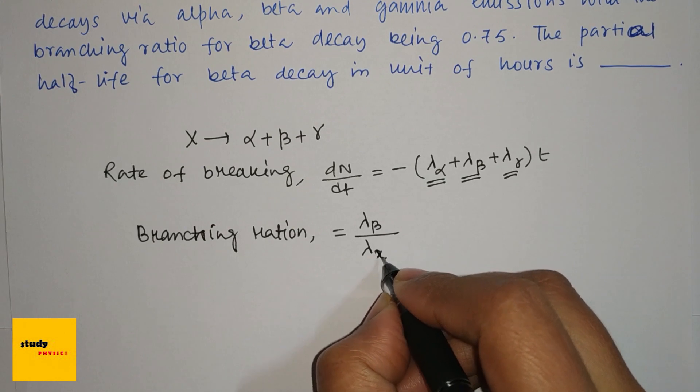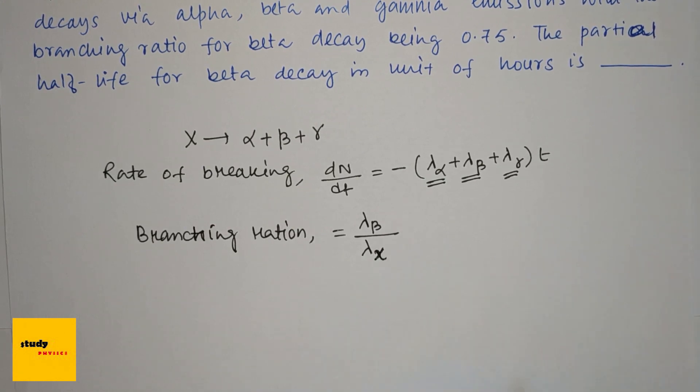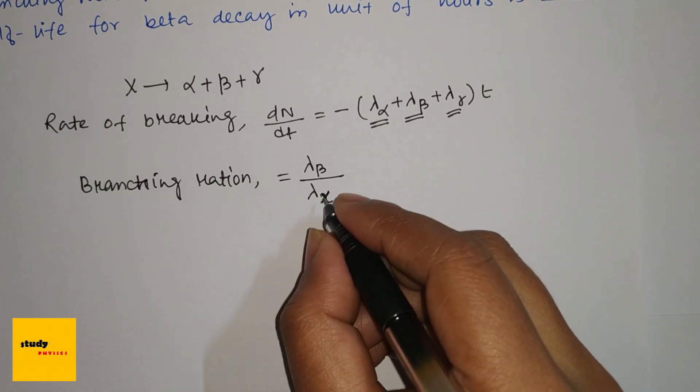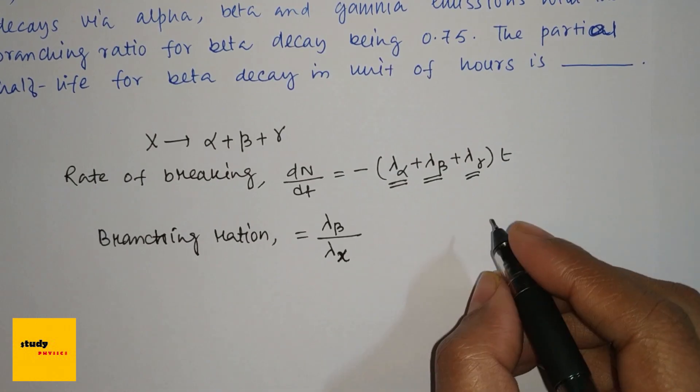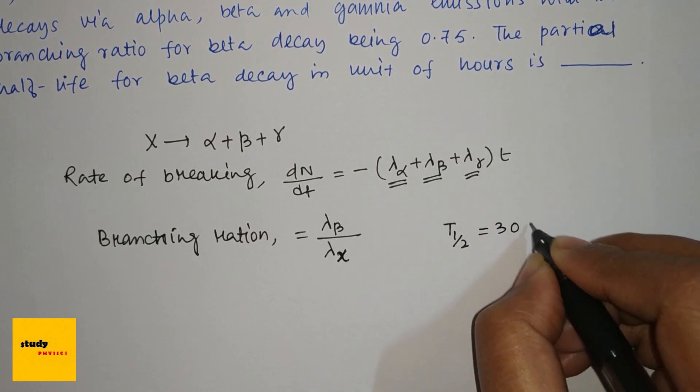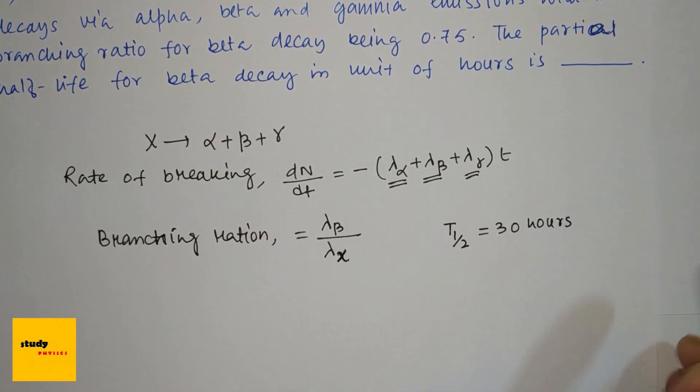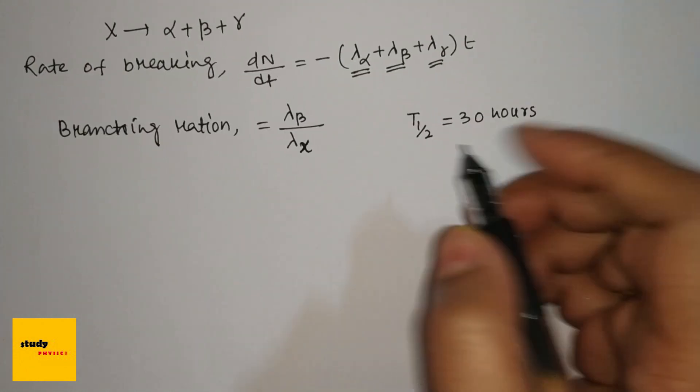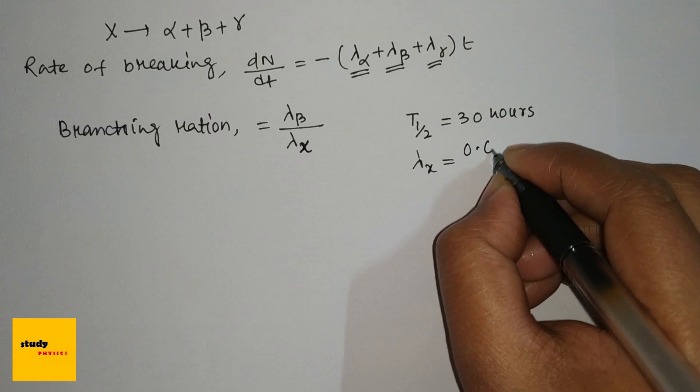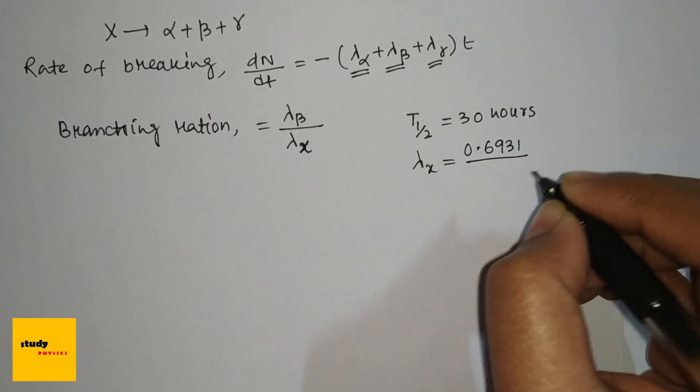The half-life of X is 30 hours. From here we can write that the decay constant of X is 0.6931 divided by T half, so 0.6931 divided by 30 hours.